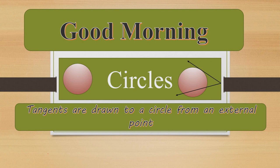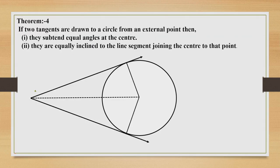In this video, I am going to discuss the angle subtended by the tangents and their inclination to the line segment joining the center to that point. The theorem states: if two tangents are drawn to a circle from an external point, they subtend equal angles at the center, and they are equally inclined to the line segment joining the center to that point.